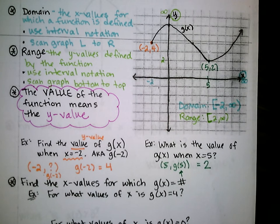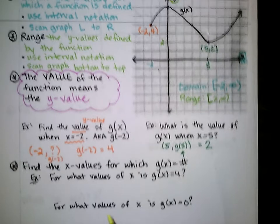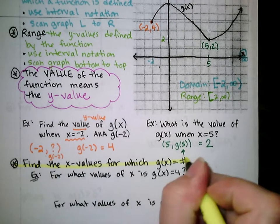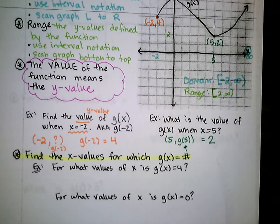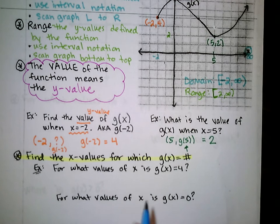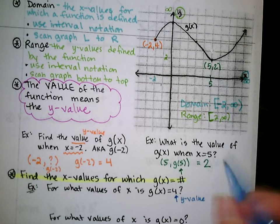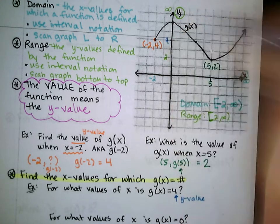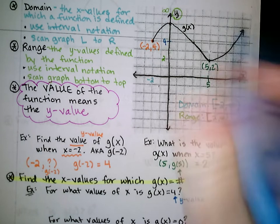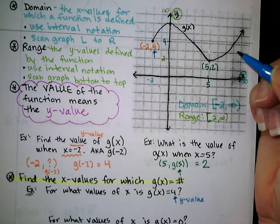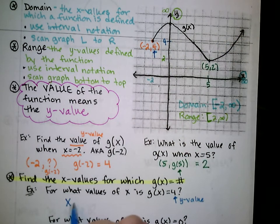Let's reverse that a little bit and now find x values if we are given a y value. We've had two sets of instructions: one, find the y value if given the x value; the other, find the x value if given a y value. Now we are asked to find what values of x would make g of x — the y value — equal 4. I'm looking for ordered pairs that go some number comma 4. I find where y is 4 on the graph. When x is negative 2, y is 4, so x equals negative 2 is one of those.